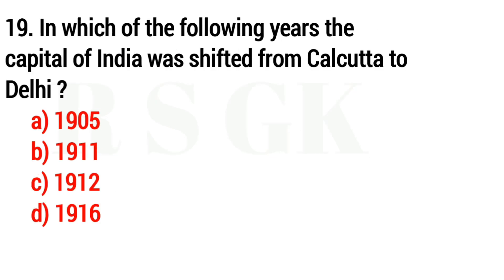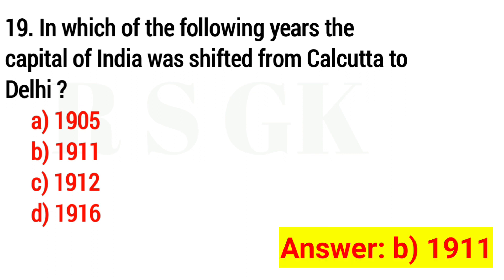Question 19. In which of the following years was the capital of India shifted from Kolkata to Delhi? Answer is option B: 1911.